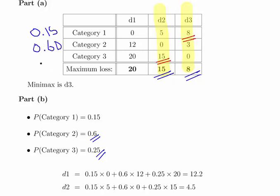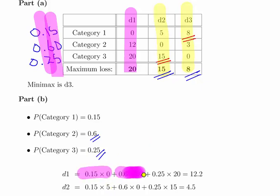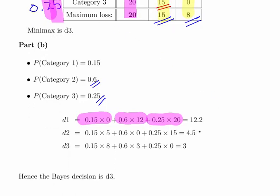We're going to multiply those probabilities by these loss functions—it's essentially the expected value of a discrete random variable. We have 0.15 times 0, 0.6 times 12, and 0.25 times 20, and we get 12.2. When we do this for d1, d2, and d3, we get 12.2, 4.5, and 3 respectively.